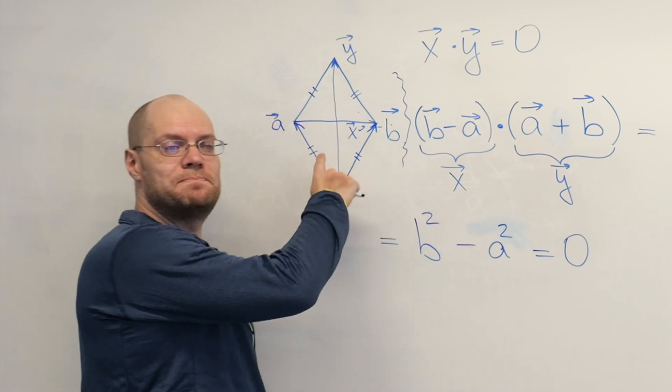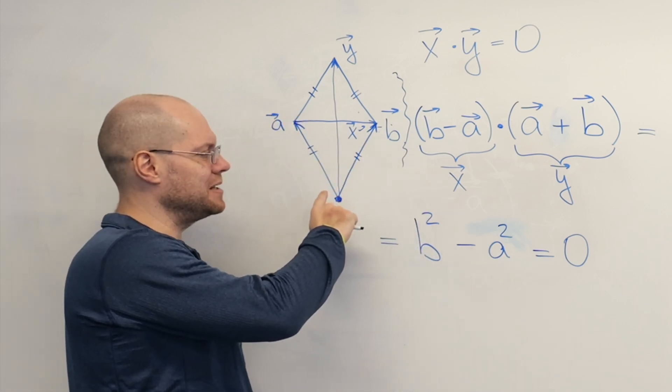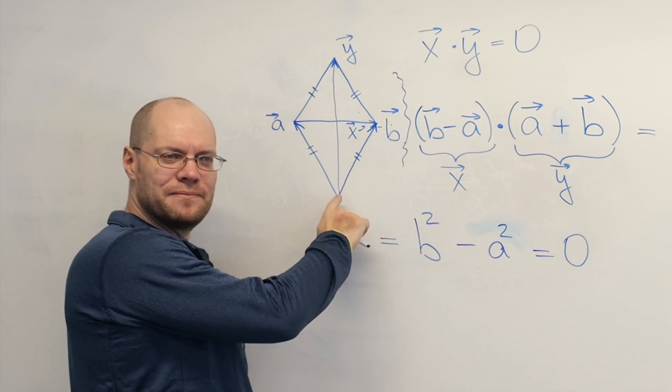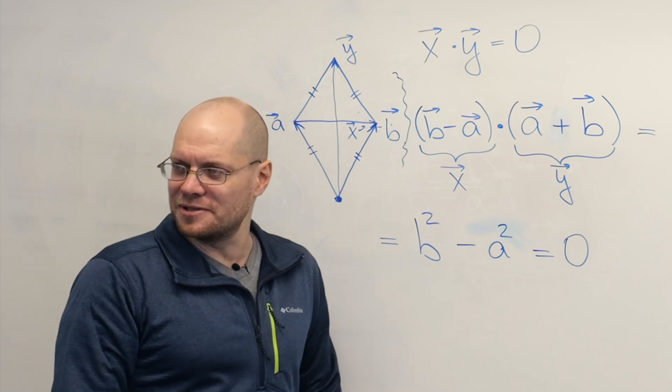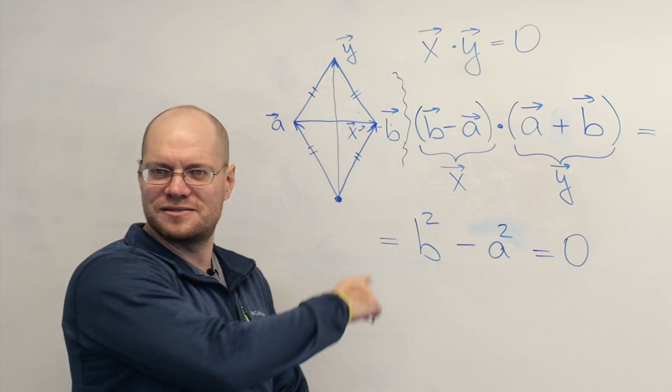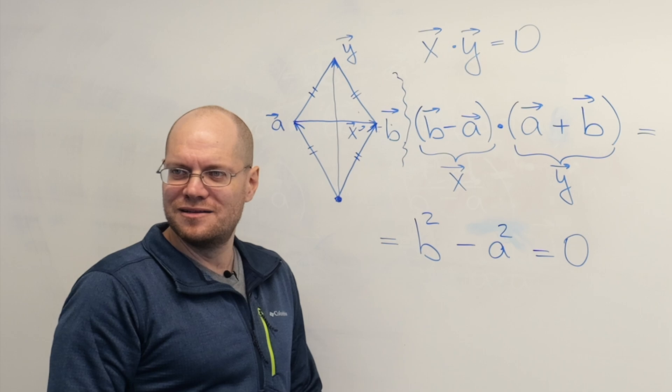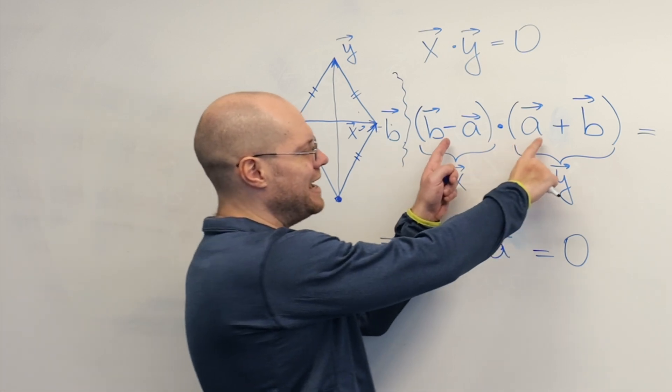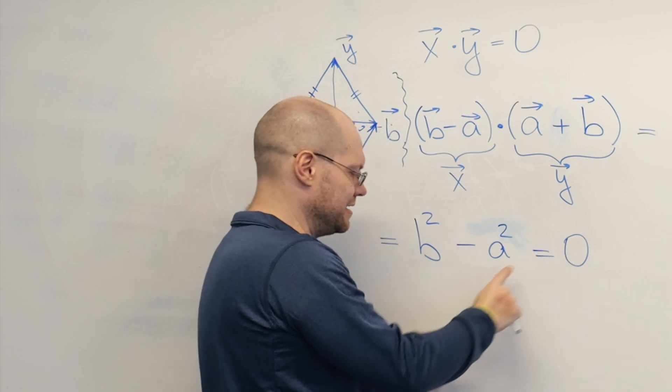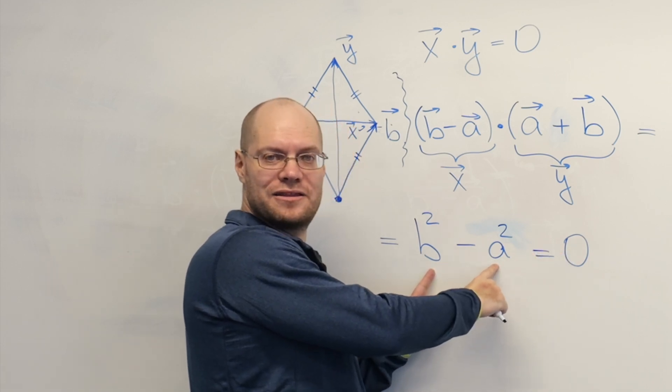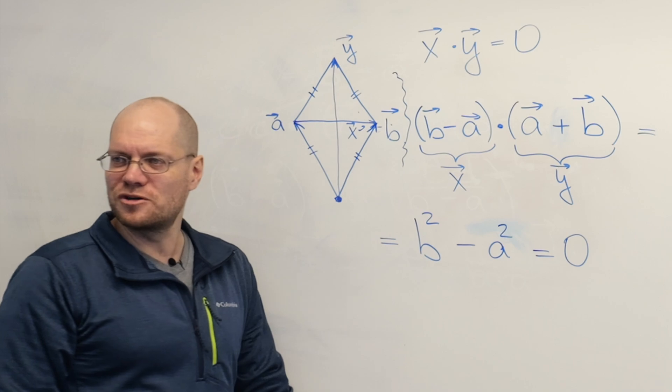This also works backwards. I could make the following statement. If a parallelogram has orthogonal diagonals, then it's necessarily a rhombus. Do you see that this, the algebra proves this as well? Well, if the diagonals are orthogonal, then this product is zero. And therefore the length of b equals the length of a. Right? So it works both ways.